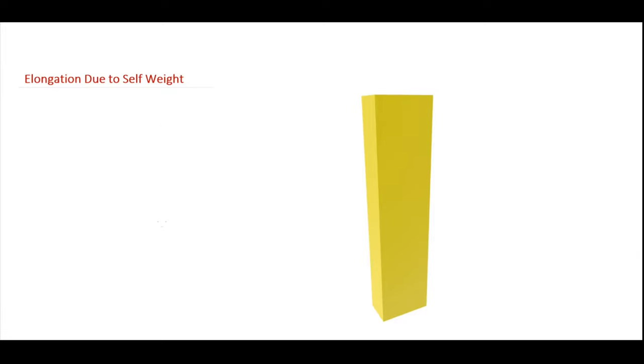Now let's consider a bar that is fixed from the top and it is having A as cross-section area, then L is the total length. So this is the parameter L, and w is weight per unit volume of the bar.